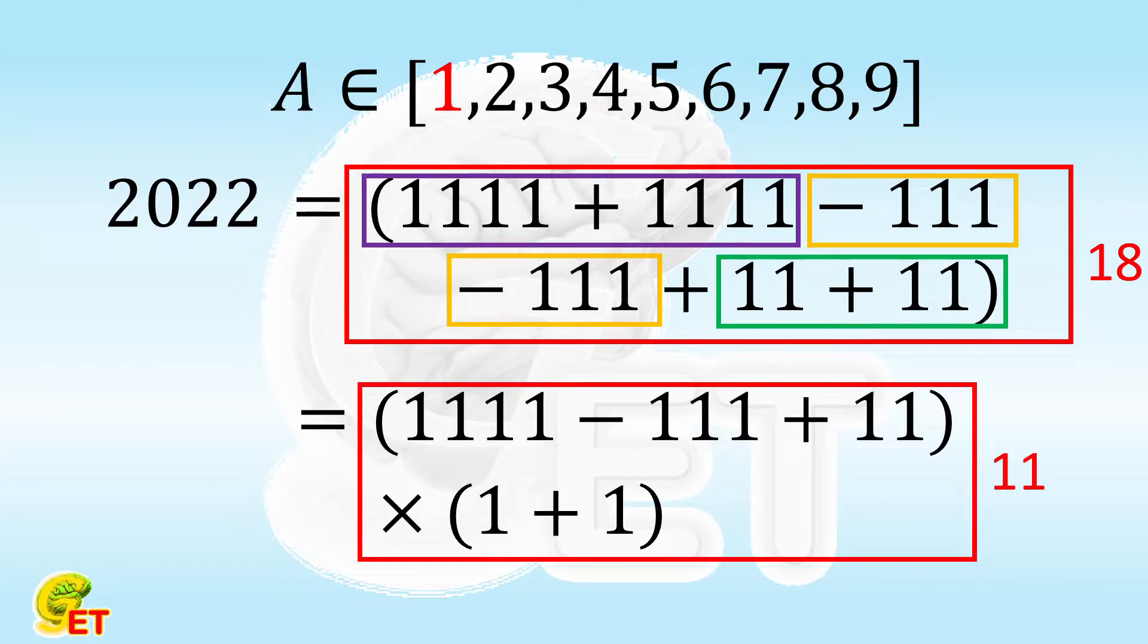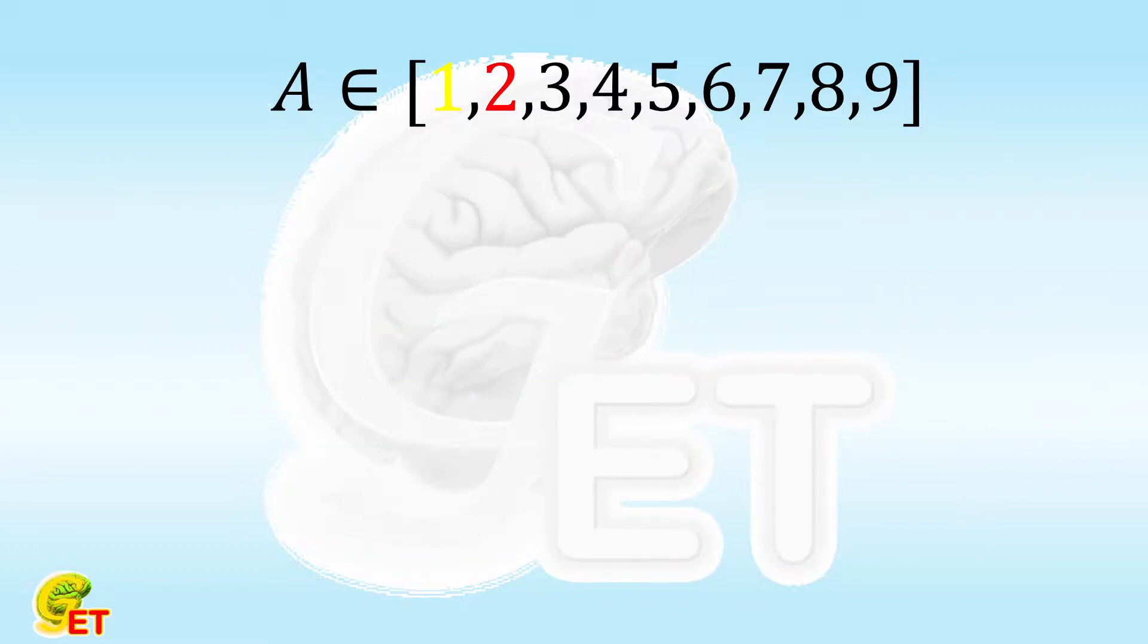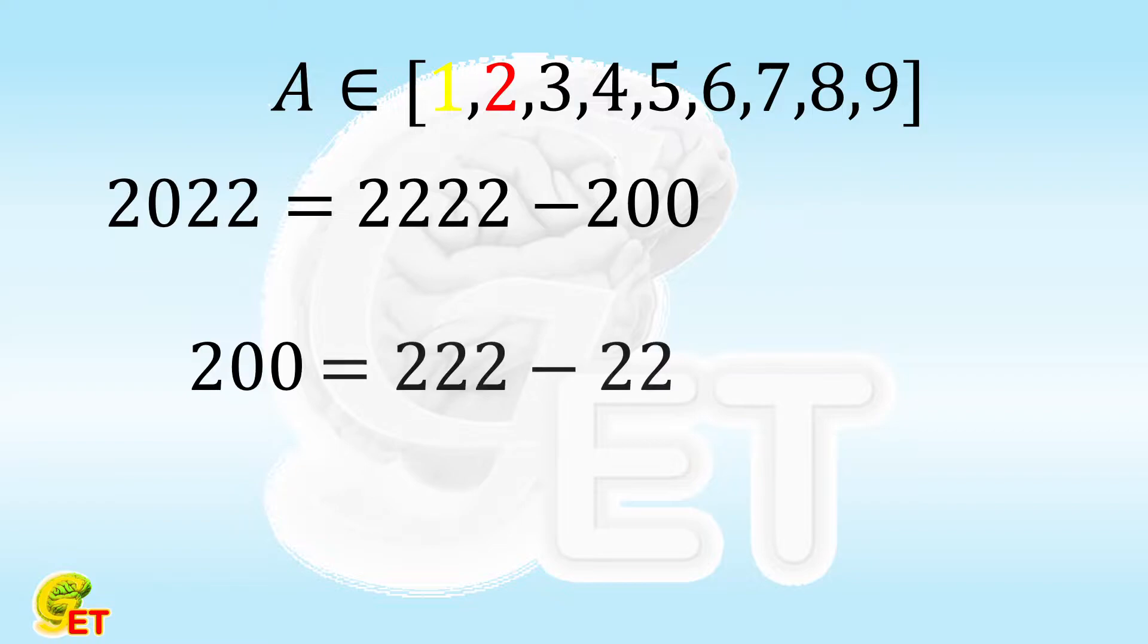Now let's check 2, which is really intuitive, as 2022 is equal to 2,222 minus 200. What is 200? 200 is 222 minus 22.